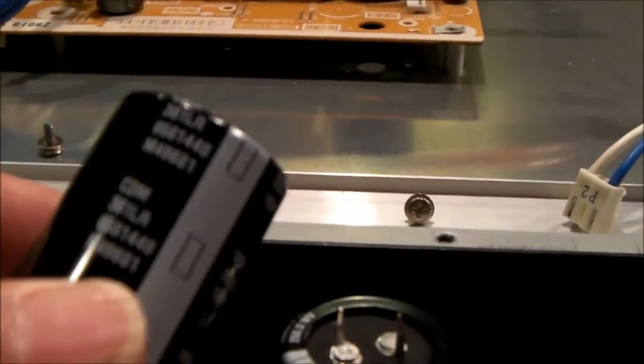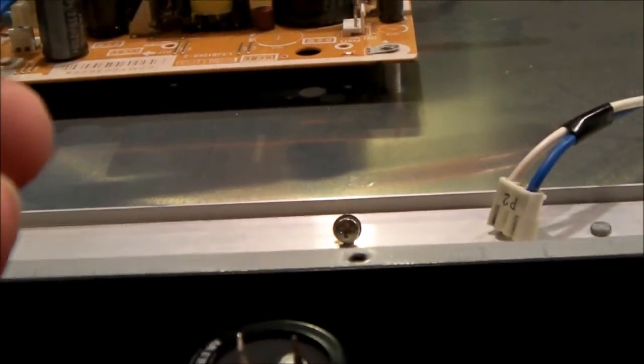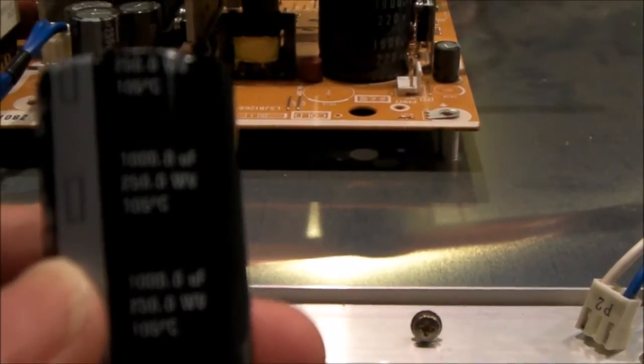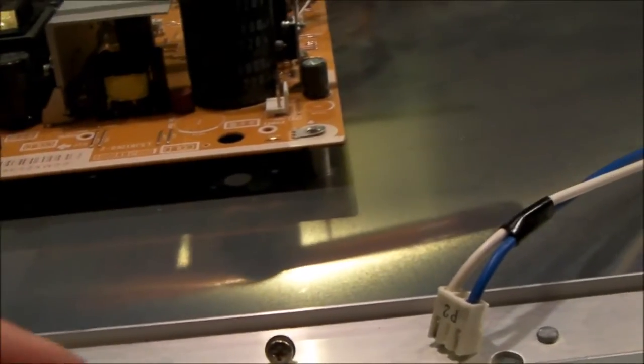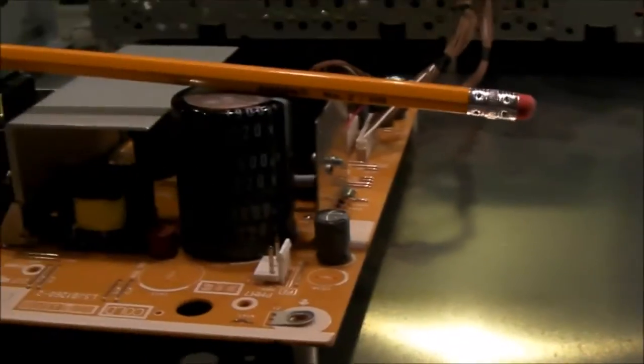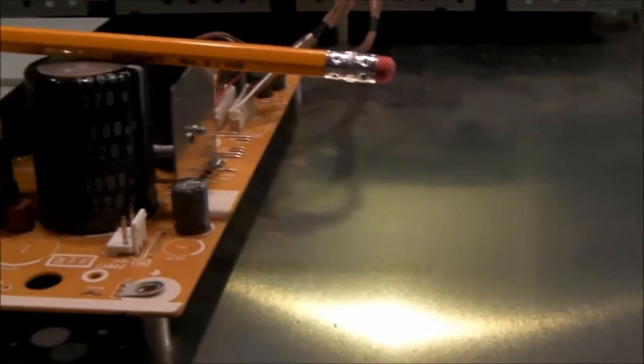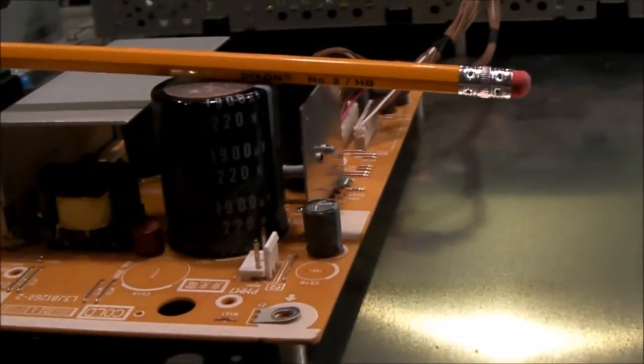I went with a fairly expensive capacitor. These are Cornell Dubleers, I believe. CDMs. Made in the USA. And they're 1,000 microfarads each, rated 250 volts. Also pay attention to the temperature rating. 105 degrees C is the absolute minimum you want to put in. So the original was 105 degrees C, and my replacements that I'm going to put in are 105 degrees C.